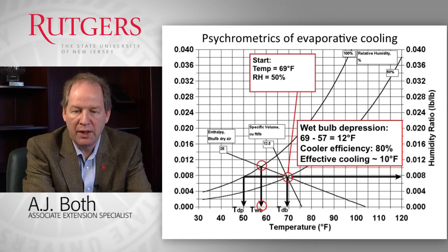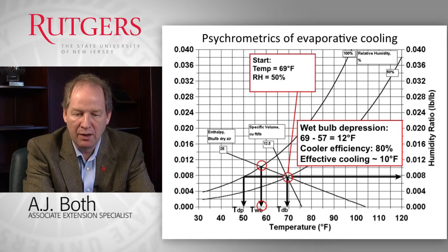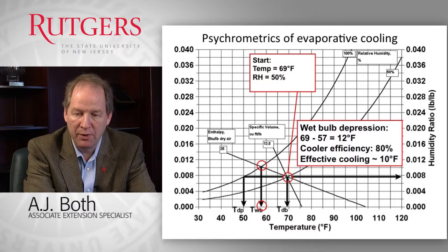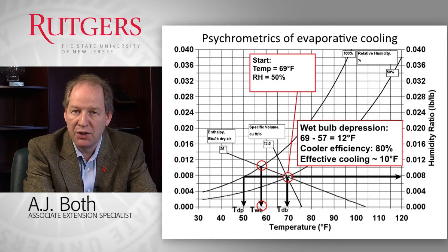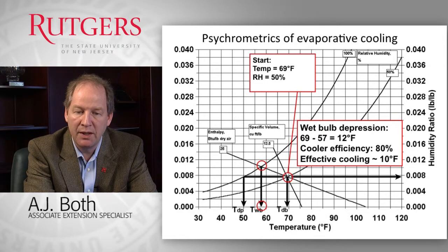One tool we use to evaluate how evaporative cooling systems work is the psychrometric chart. On the horizontal axis we look at temperature, and on the vertical axis we look at humidity ratio, which tells us how much water vapor is present in a quantity of dry air. In greenhouse environments we typically work with temperatures and relative humidities to characterize conditions, and the psychrometric chart allows us, by knowing two conditions such as relative humidity and temperature, to quickly identify the other conditions important for understanding what changes are occurring or can occur in an evaporative cooling system.